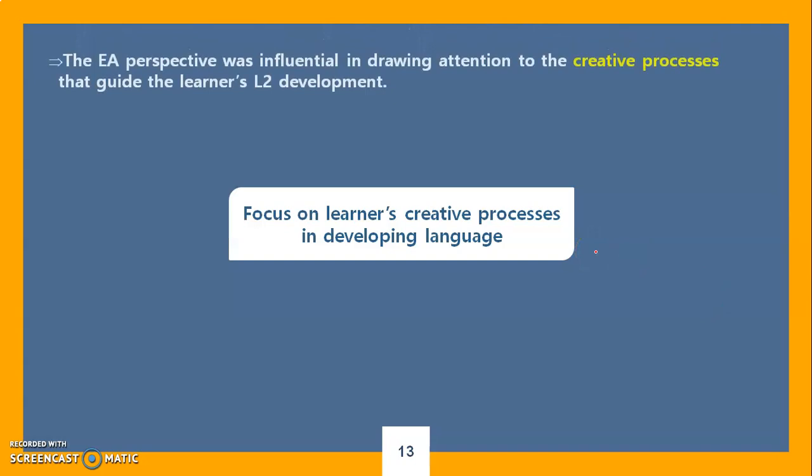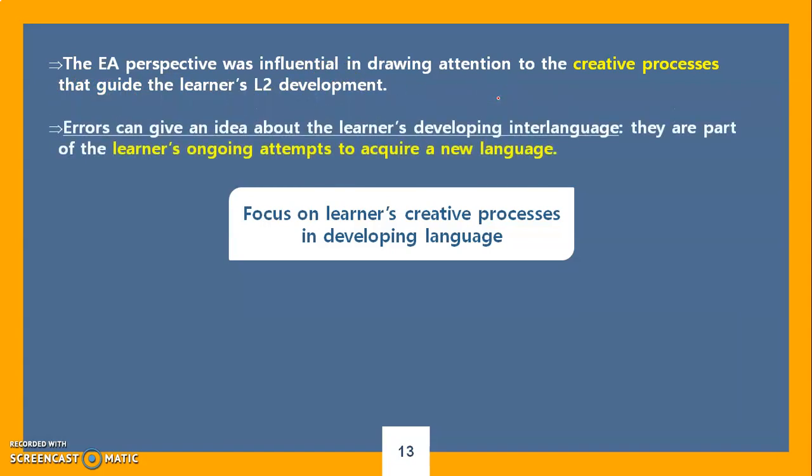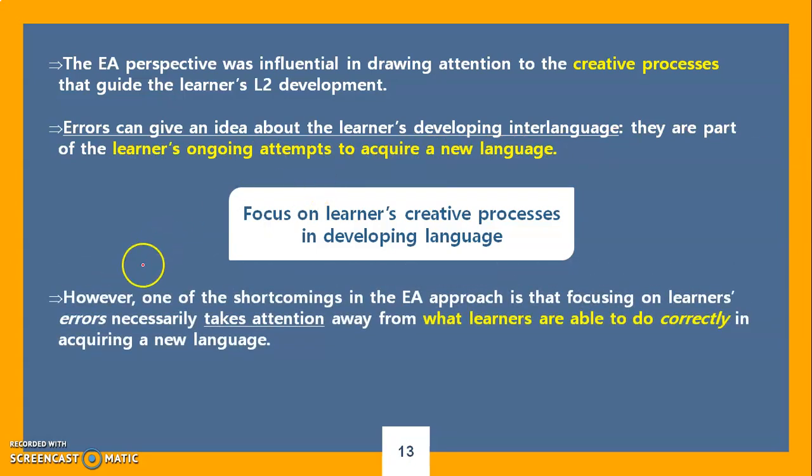Therefore, as a summary of the EA approach, they focused on the creative processes of developing the language, and this creative process is unique to a learner and it guides their language development. Errors can give an idea about the learner's developing interlanguage, the learner's ongoing attempts to acquire a new language. They build the system of the interlanguage. However, one of the shortcomings of the EA approach, as always, is that it focuses too much on errors and forgetting about what learners are able to do correctly—kind of a negative aspect of the approach.